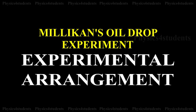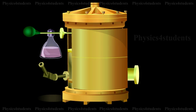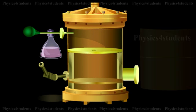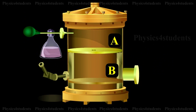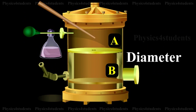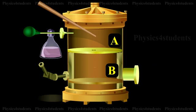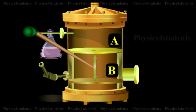Millikan's oil drop experiment - observe the experimental arrangement carefully. The apparatus consists of two horizontal circular metal plates A and B, about 22 cm in diameter and separated by a distance of about 16 mm as shown in the diagram.